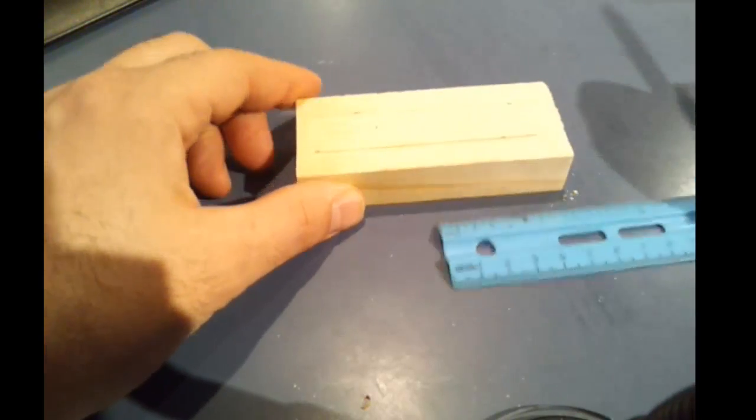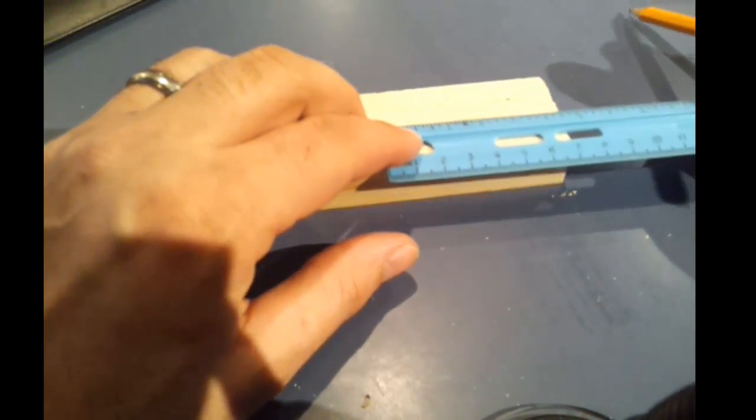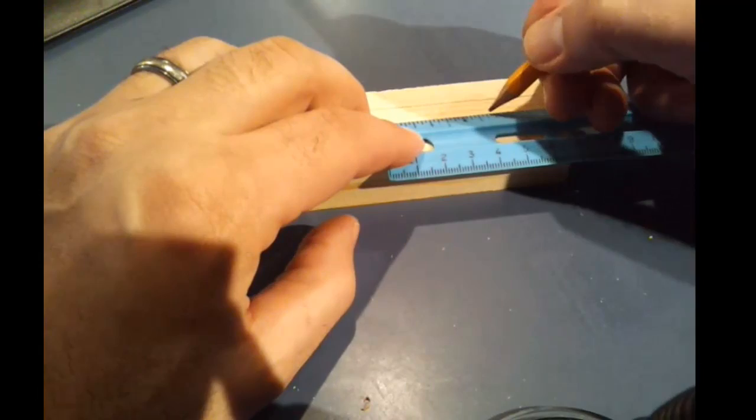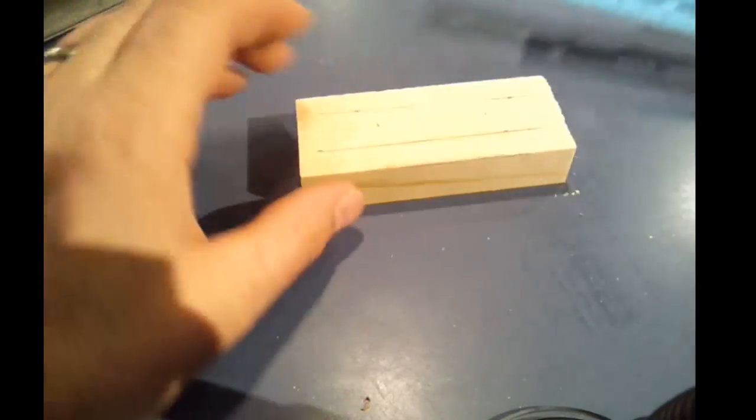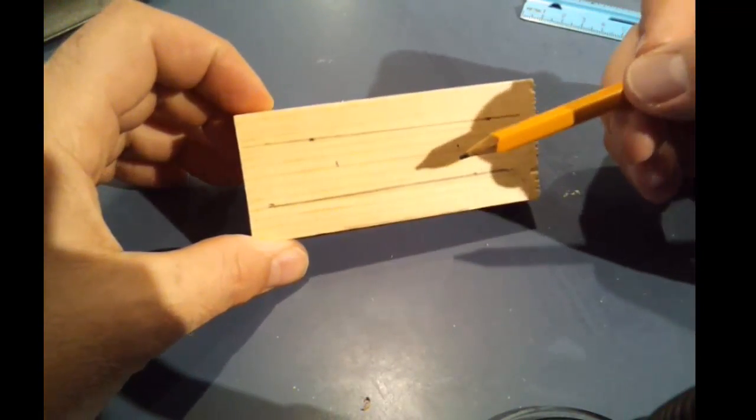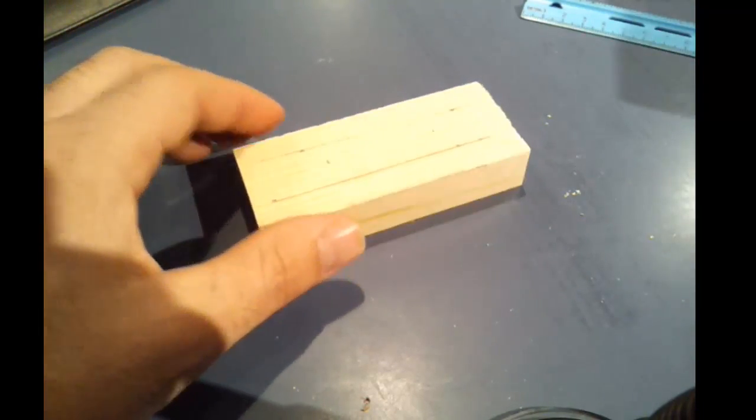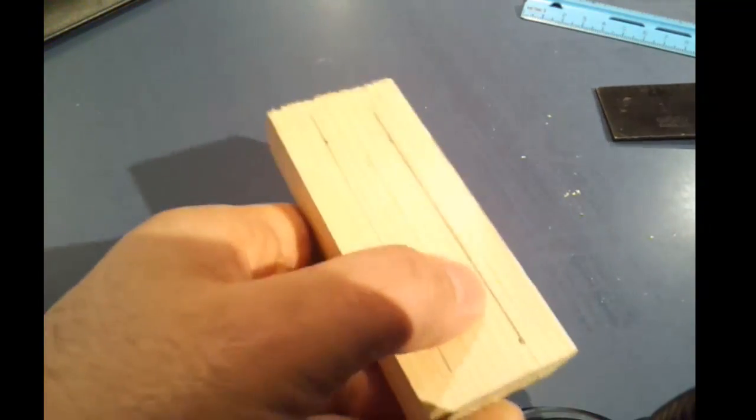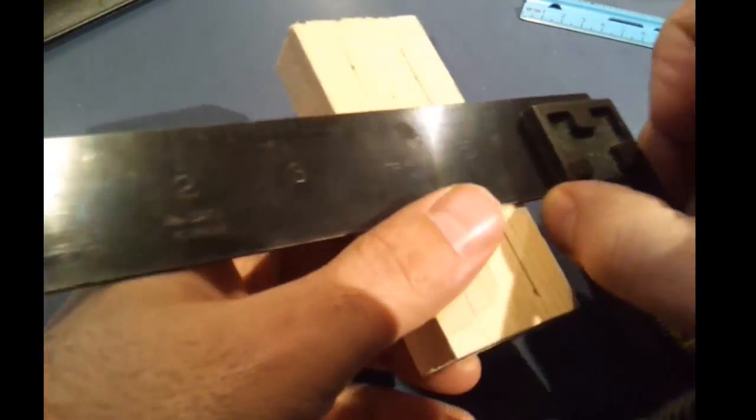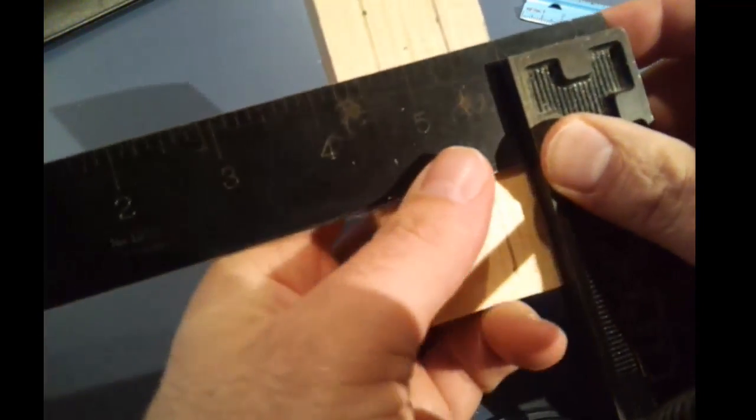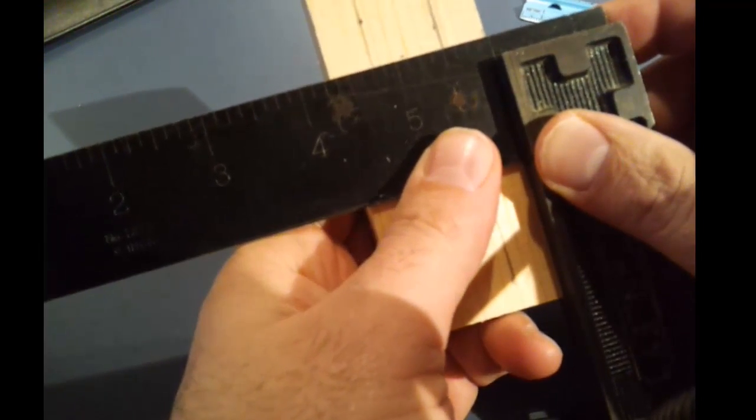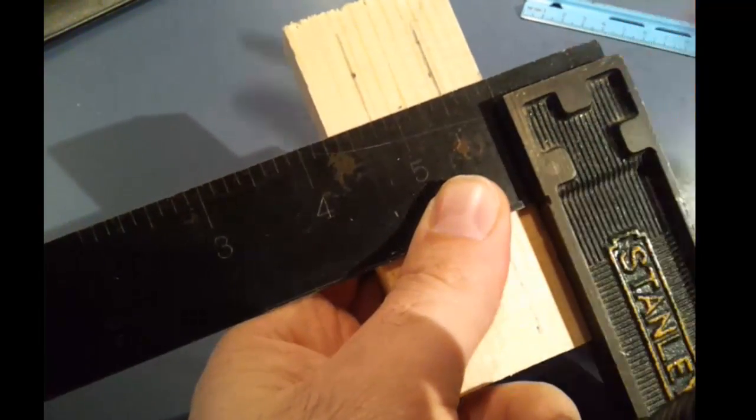I'm not going to use a ruler to make these lines here. What I am going to use is my square again. So I'm going to hold the piece this way and bring in my square, hold it tight, and then slide it up till I get to my mark here and then use my pencil to draw my line across.